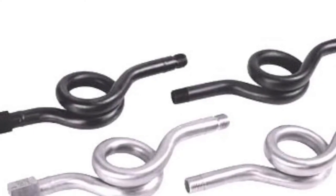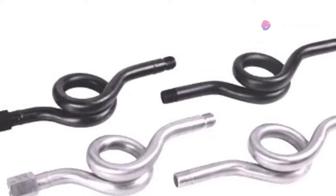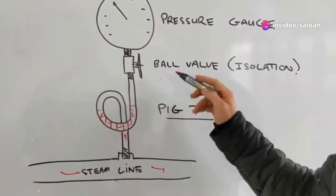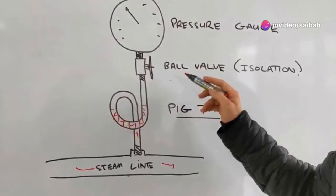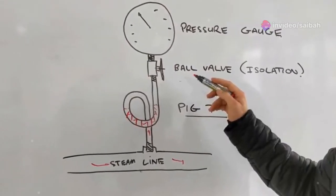But depending on your needs, siphons can be made from other materials to cut costs. You can even add extra coils or adjust the length of the pipes to fit your specific application.